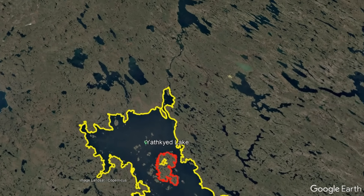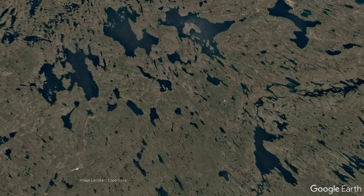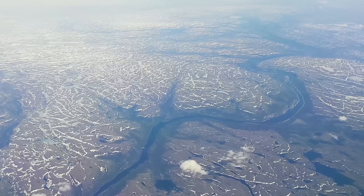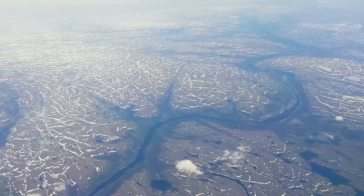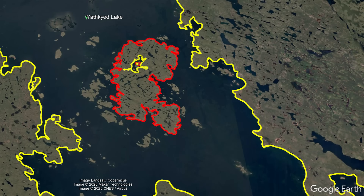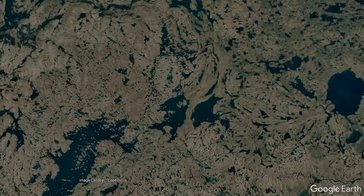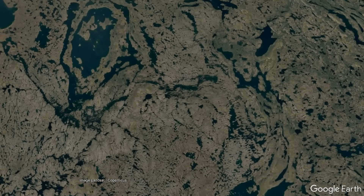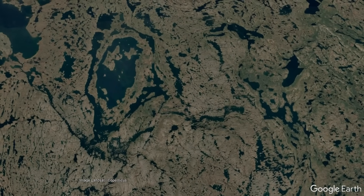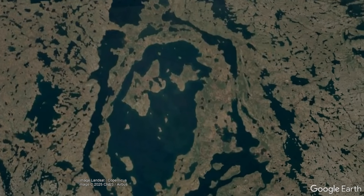Looking around, you can spot so many other lakes — too numerous to count — marking a portion of Canada's more than 2 million estimated lakes. With such an absurdly high number of lakes, it is not a surprise that a 5th order lake exists. In other words, by sheer chance, random variation in the formation of these lakes allowed this unnamed lake to form.